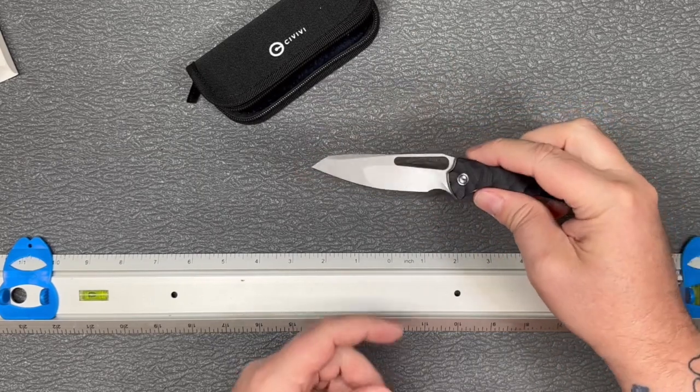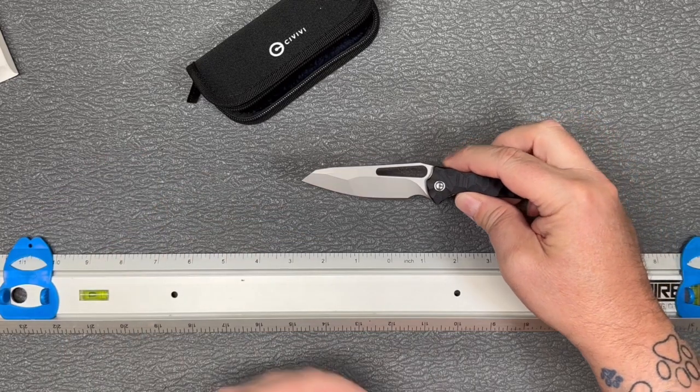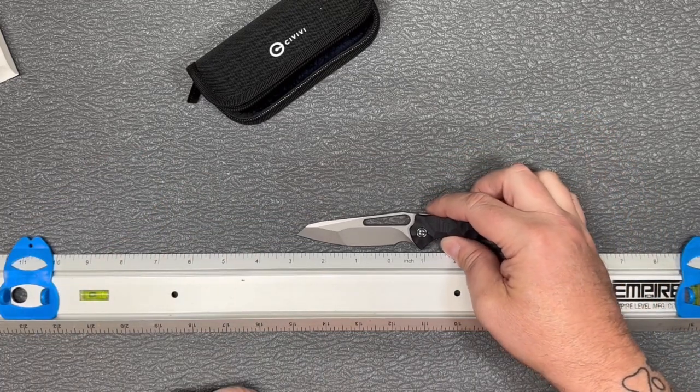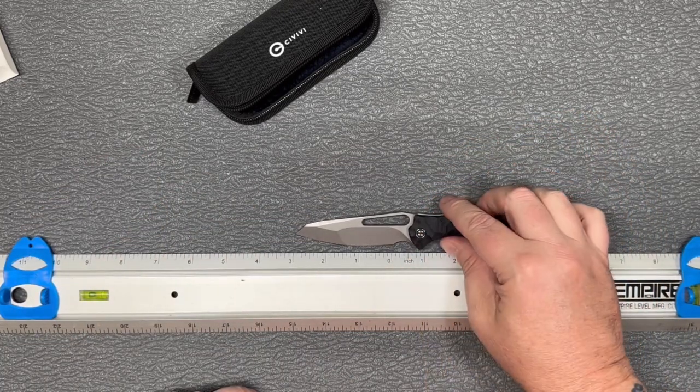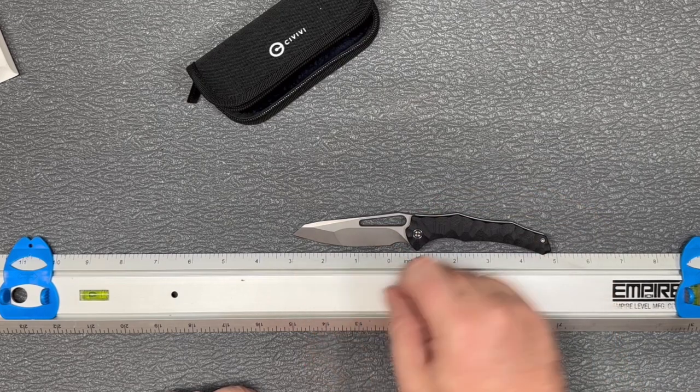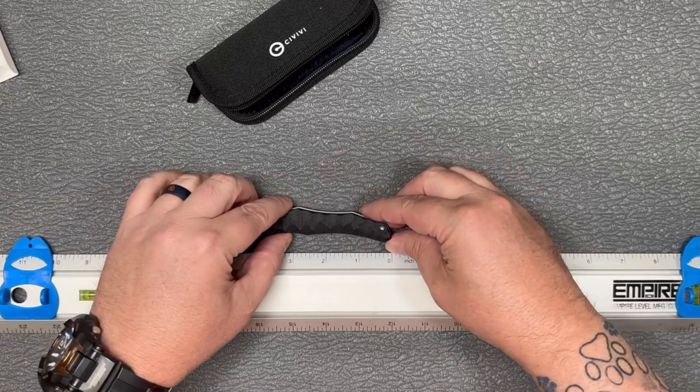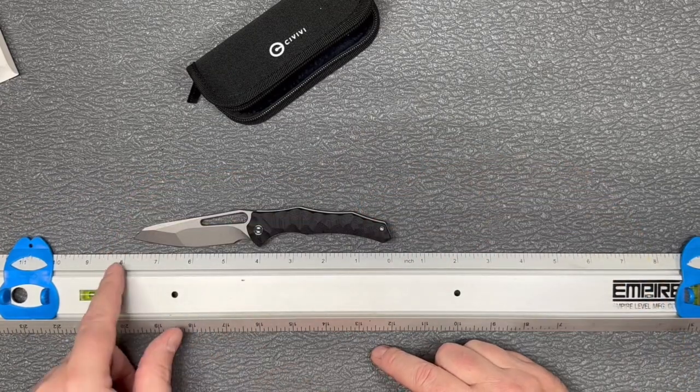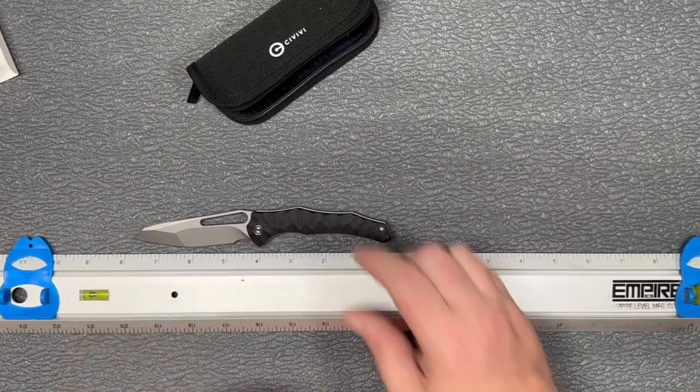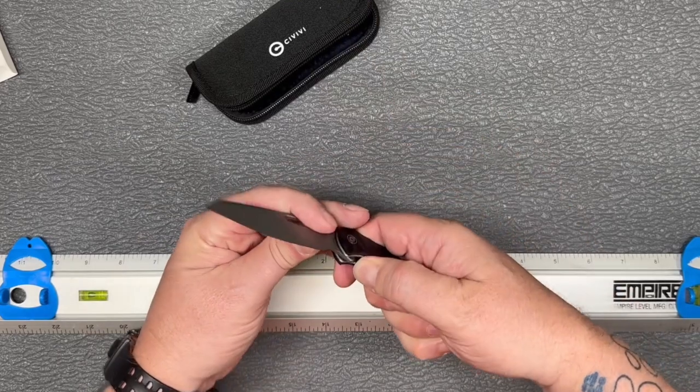Let's take a look here. We've got kind of a reverse tanto or a wharncliffe blade on it. From the finger choil here, we've got just over a three inch usable blade on there. We've got about eight inches here when it's fully open, got your liner lock in there.